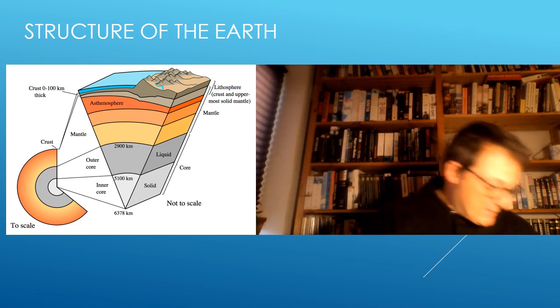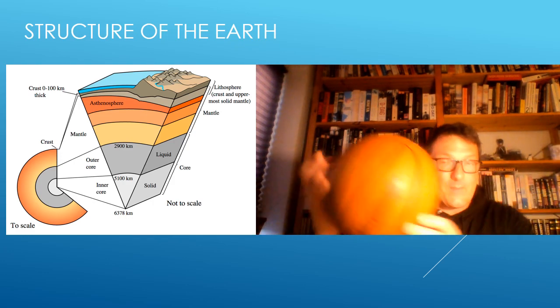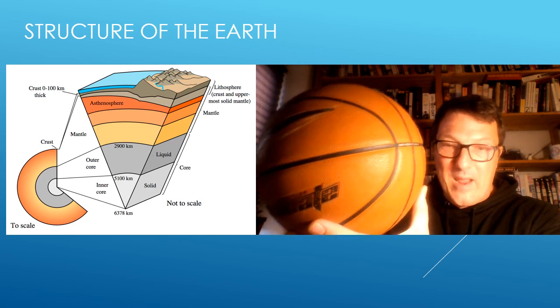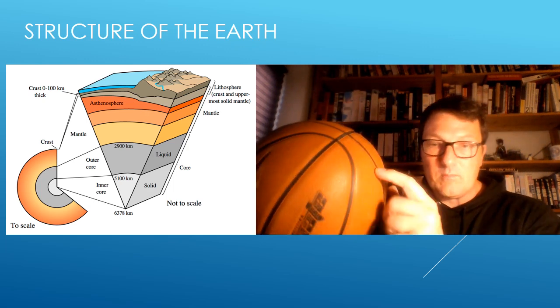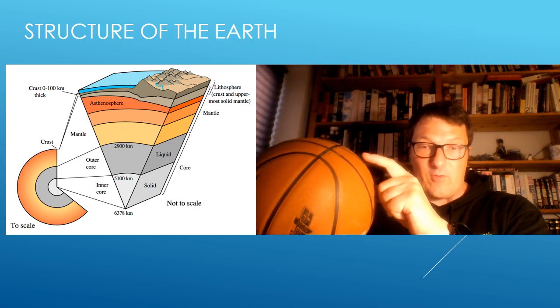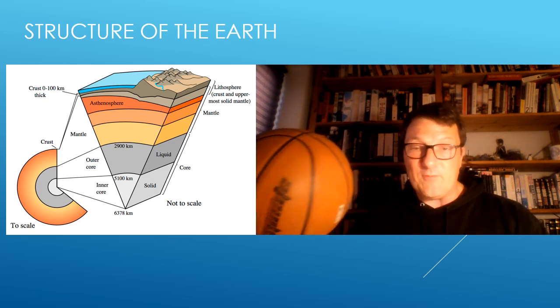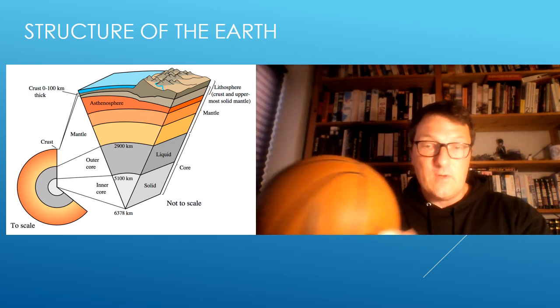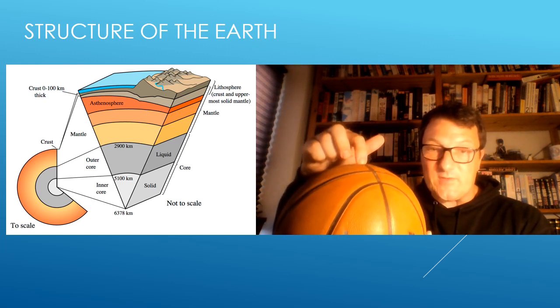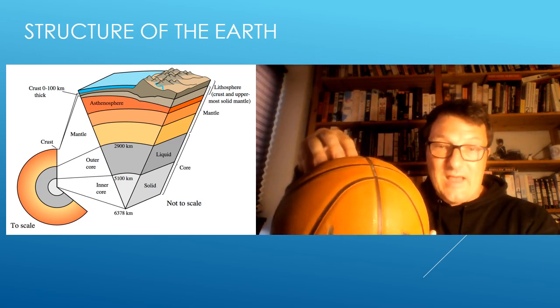It's a bit weird to think about. Using my basketball here, we have this thin layer, like if I took a coat of paint and painted my basketball - this will be the layer of the Earth where we can live. If you go any further up, pressure is too low, oxygen pressure is too low, it's too cold. If you go any further down, it's too warm, full of radiation and molten rock. So we are very lucky that just here on the surface we are again in a Goldilocks zone: not too warm, not too cold, so life can exist.